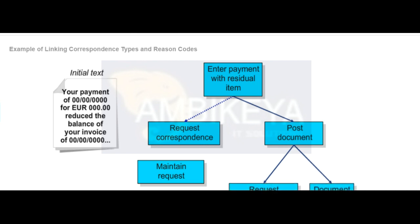However, if a document has several line items, some of the line items may have different reason codes and associated correspondence types. In this case, the automatic payment notice cannot be sent according to the reason code because the system does not know which correspondence type to choose. As a result, the system uses the payment notice assigned to the tolerance group independent of the reason codes.